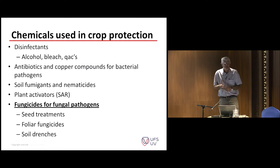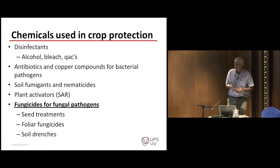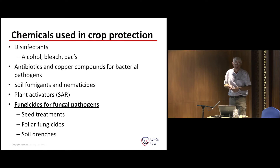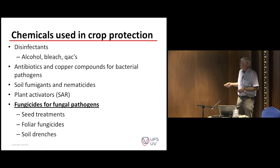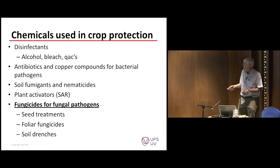These are just a few general concepts. I cannot talk about specific chemicals because each country will have its own registered products, but we will run through a few principles to refresh your memories. There's a wide range of chemicals used in crop protection, ranging from simple disinfectants — bleach, sodium hypochlorite — to antibiotics and copper compounds for bacterial pathogens, fumigants, nematocides, and activators that induce systemic acquired resistance. Fungicides for fungal pathogens can be applied as seed treatments, foliar fungicides, or soil drenches.